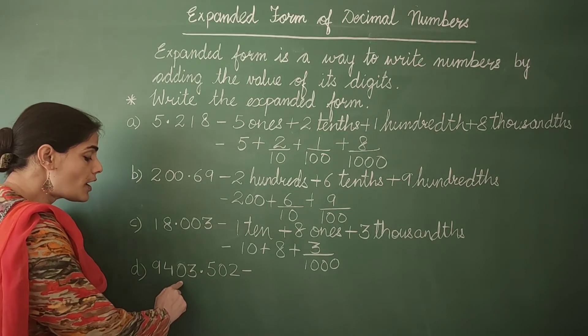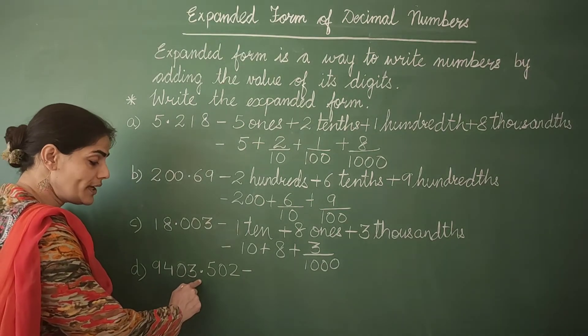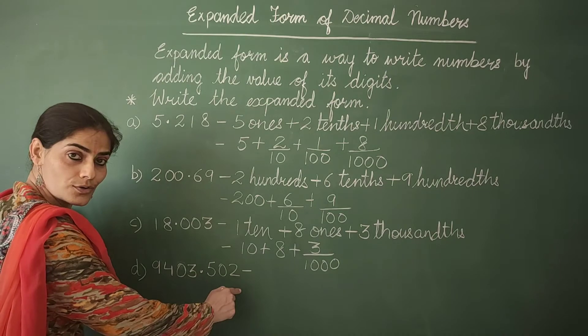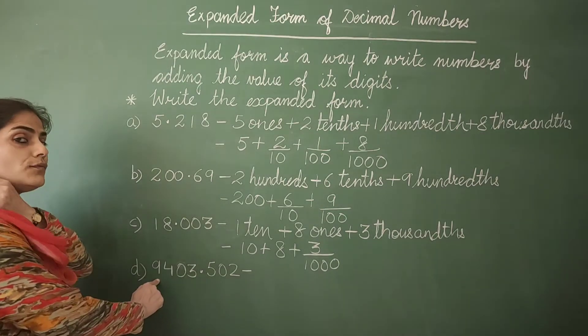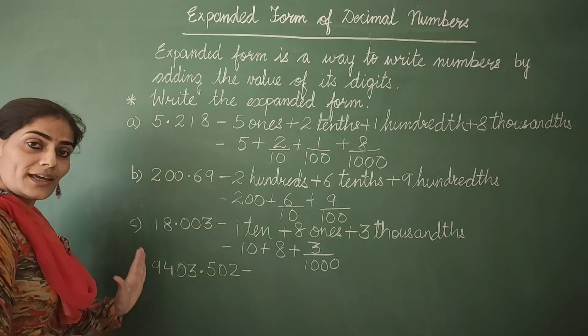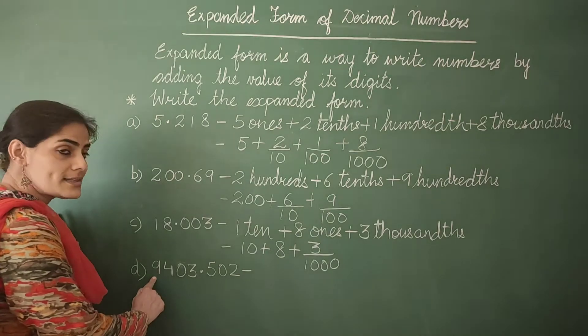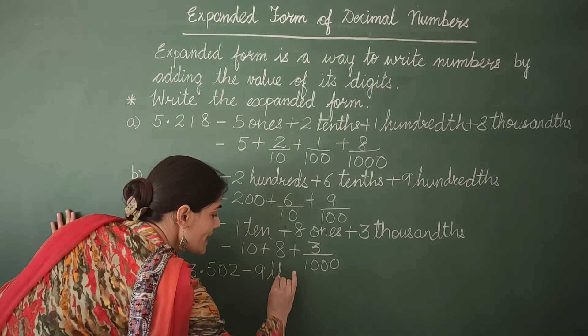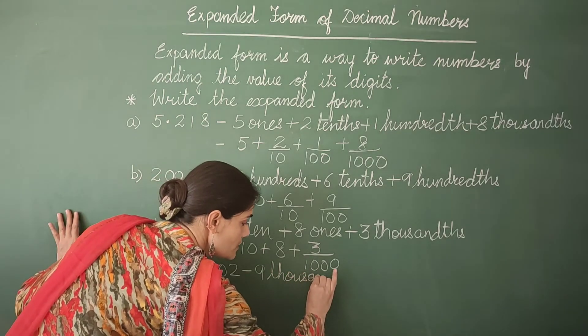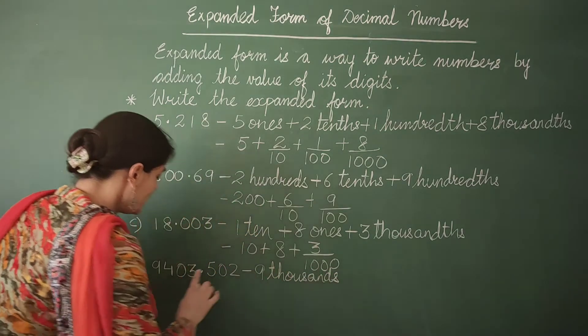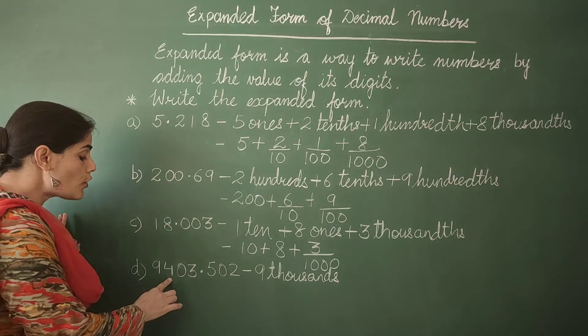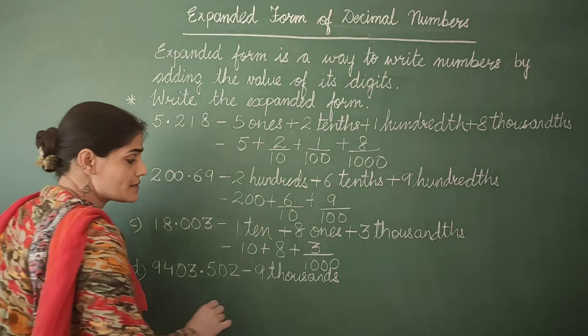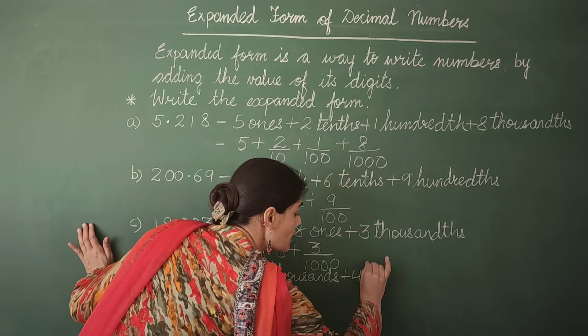9,403.502. So let's begin with the digit on the extreme left. It is 9 thousands. So I write here 9 thousands. Next is 4. 4 is at hundreds place. So 4 hundreds.